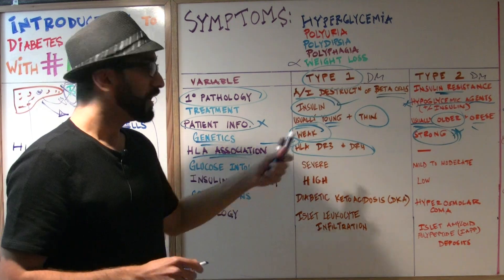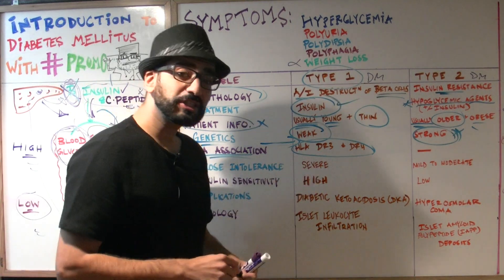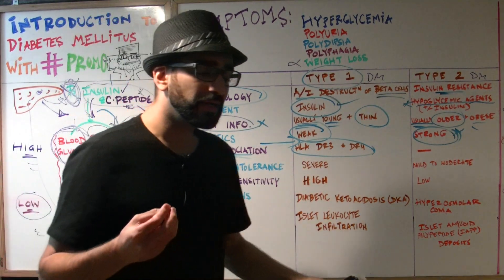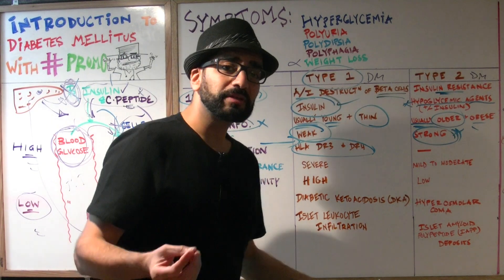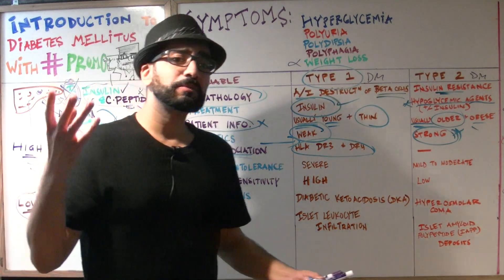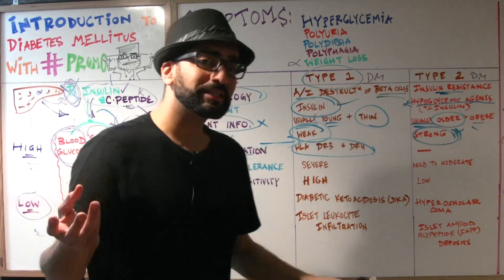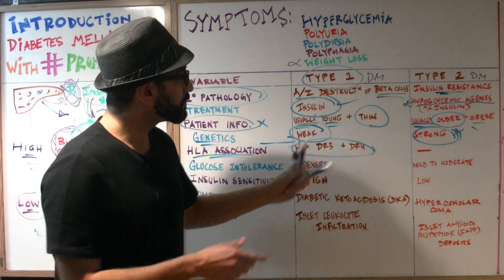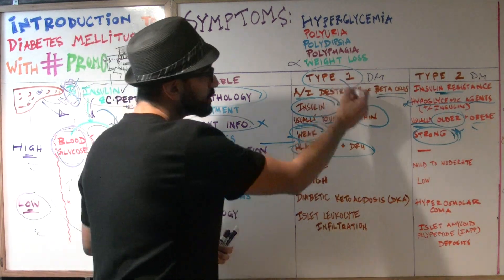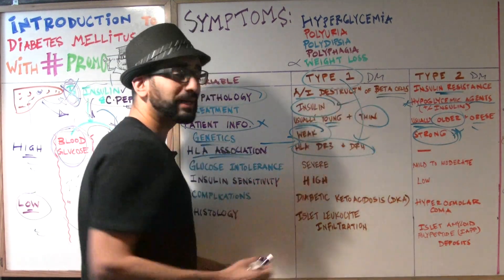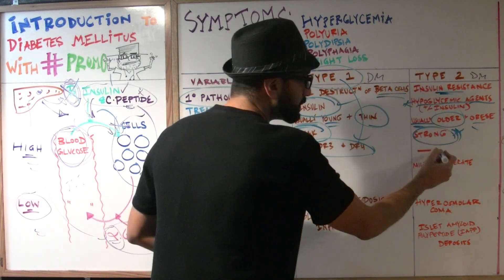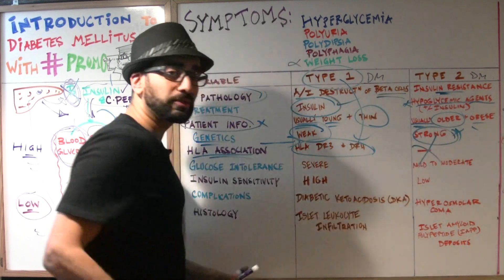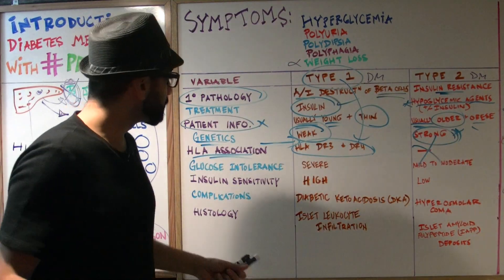HLA association is very important — this is part of our immunology subtype we have to learn about. We talked about this when we discussed the thyroid gland as well. HLA DR3 and HLA DR4 are highly associated with type 1 diabetes. With type 2 diabetes, there is no HLA association. That's another important fact to memorize.